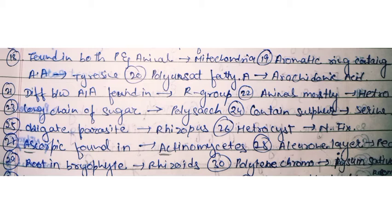If asked whether most animals are autotrophic or heterotrophic, the answer is heterotrophic. A long chain of sugars is made up of polysaccharides. The amino acid which contains sulphur is serine. Obligate parasite: Rhizopus. Heterocyst helps in nitrogen fixation.